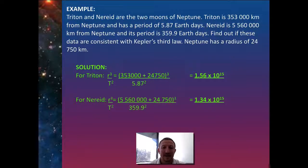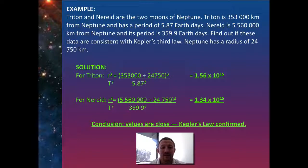Then we do exactly the same for Nereid: 5,560,000 plus the radius of Neptune, and we've got 359.9 days, so we square it. You'll notice the values—1.34 × 10¹⁵ for Nereid is virtually the same as for Triton. Our conclusion is that because these values are very close, Kepler's law can be confirmed.